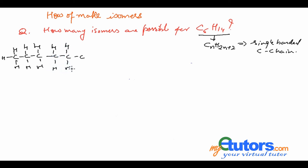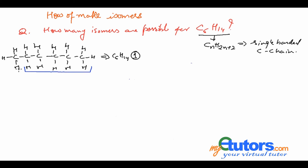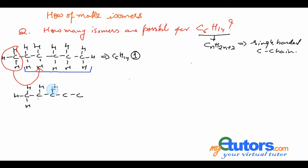It is always advisable to elaborate the structure of the first isomer, because then it would be easier to draw the remaining isomers. The method we follow to make other isomers: we select a new chain from the parent chain containing one carbon atom less than the parent chain. The carbon atom neglected from the parent chain is shifted to the second carbon atom on the new chain — it will never be placed on the terminal carbon atoms. This way, a new isomer is formed.